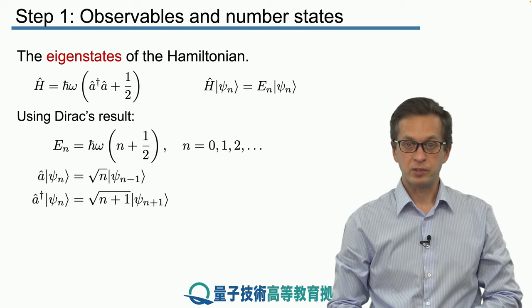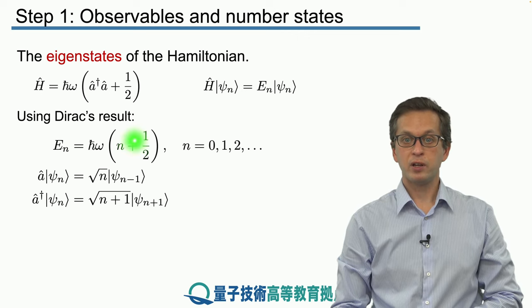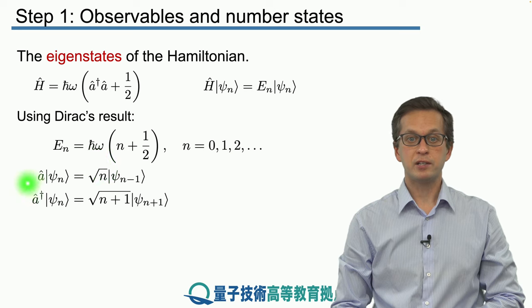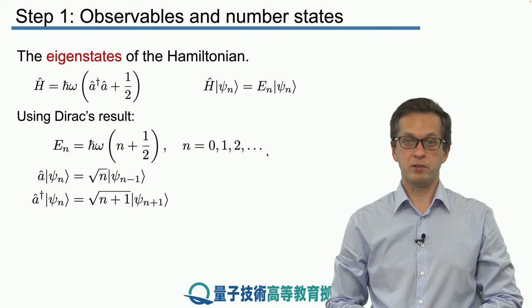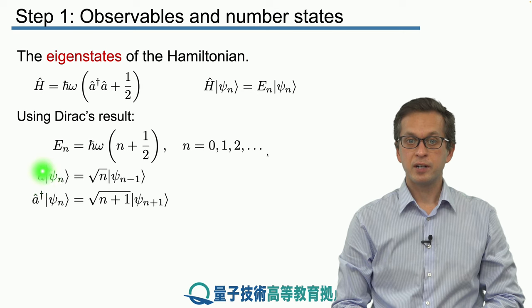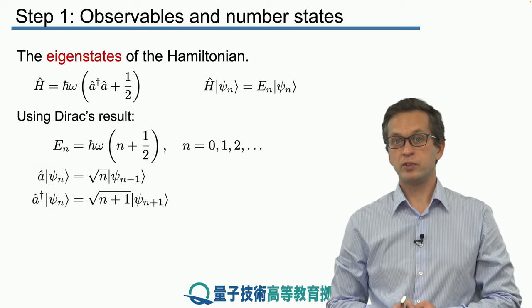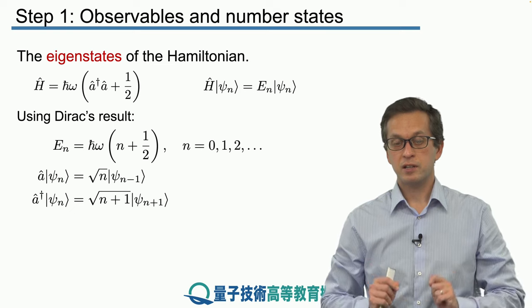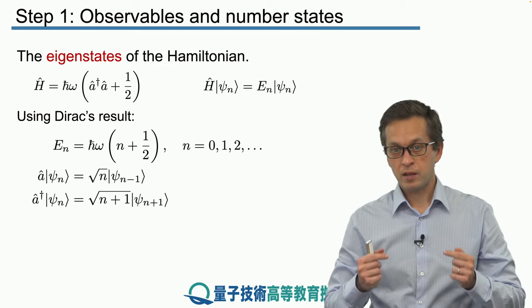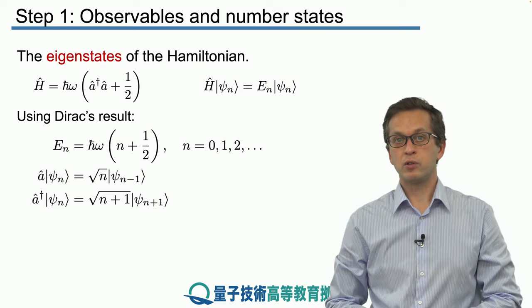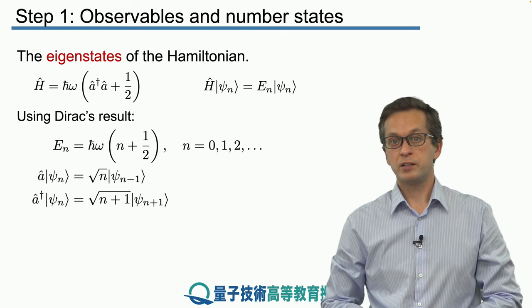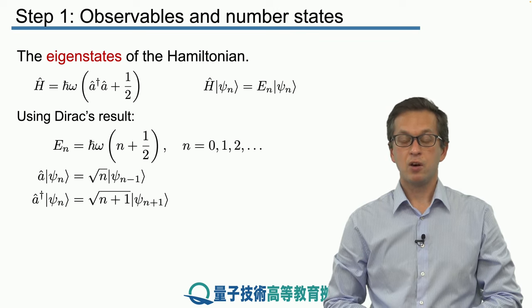The eigenvectors obey the following rules when we apply creation and annihilation operators. A is the annihilation operator because it destroys one quantum of energy in our single-mode field, decreasing the energy and taking us to the eigenvector |ψₙ₋₁⟩.